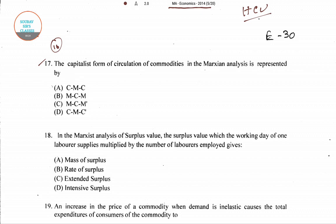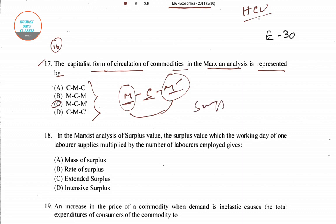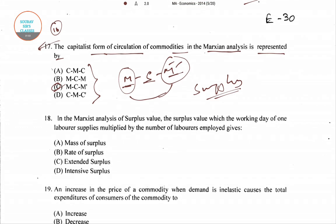Question number 17: The capitalist form of circulation of commodities in the Marxian analysis is represented by which formula? The right option is MCM', which is option C. You start with money (M), use that money to produce a commodity, then sell that commodity for M', gaining a surplus in the process. The right answer for question 17 is C.